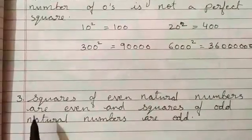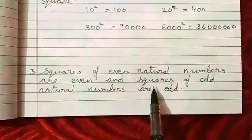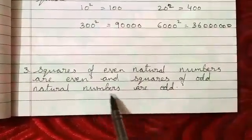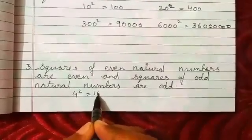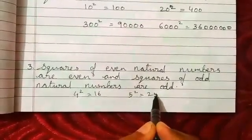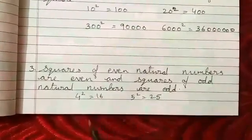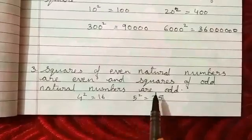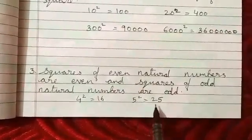The third property: squares of even natural numbers are even, and squares of odd natural numbers are odd. For example, 4²=16 and 5²=25. If you consider any even natural number, its square will be an even number. And if you consider any odd natural number, its square will be an odd number.